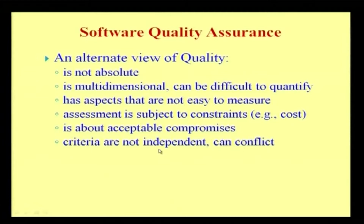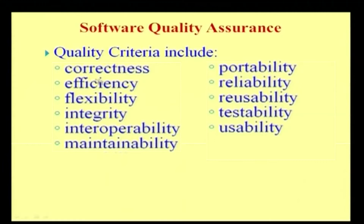Quality criteria are not independent and can conflict. Some of the quality criteria as part of quality assurance include correctness of product development, efficiency of product development, flexibility, integrity, interoperability, maintainability, portability, reliability, reusability, testability, and usability.